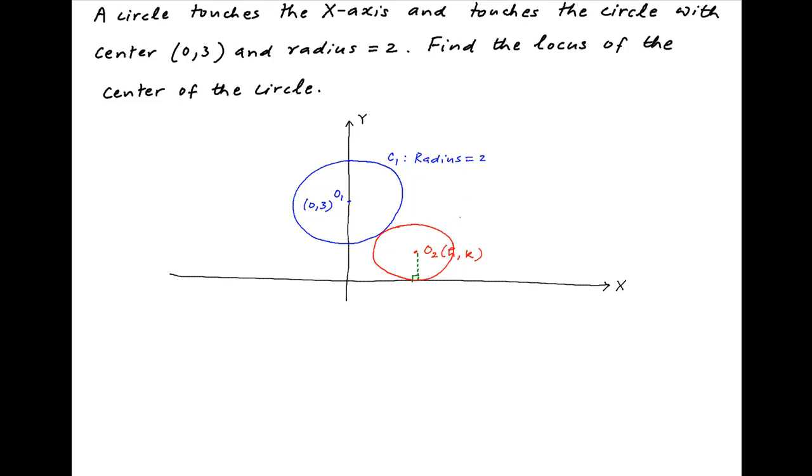Since this circle touches the x-axis, the radius is equal to the ordinate of the center, which is k. Let's also denote this desired circle by C2.